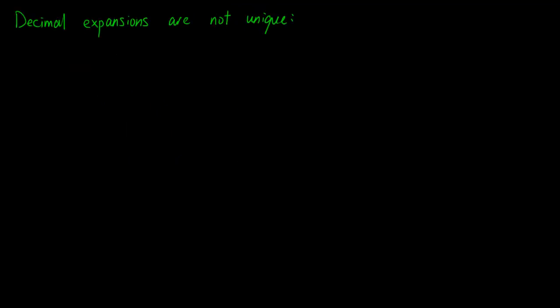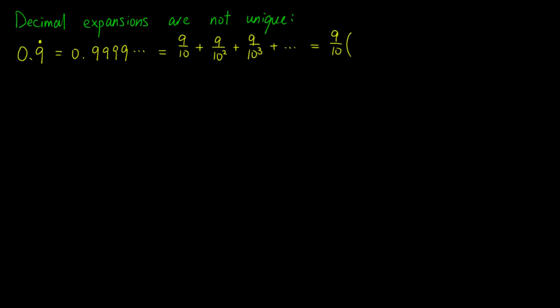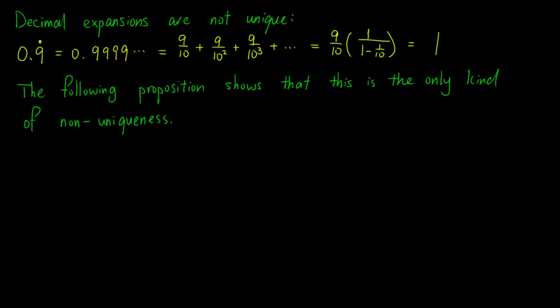Let's move on to talk about the uniqueness of decimal expansions. We know that decimal expansions are not unique because 0.9 repeated equals 0.9999..., which equals 9/10 plus 9/10² plus 9/10³ and so on, which equals (9/10) times (1 over 1 minus 1/10), which equals 1. However, we shall see in the next proposition that this is the only kind of non-uniqueness.